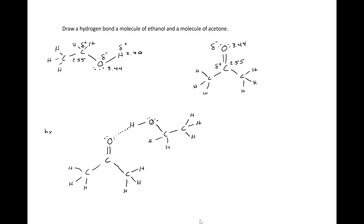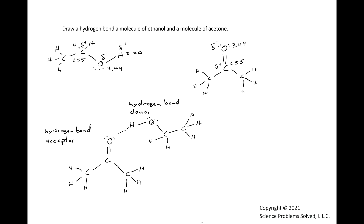In this hydrogen bond, acetone is not providing the hydrogen — it is accepting the hydrogen. Therefore, acetone in this bond is called the hydrogen bond acceptor. In this bond, ethanol is providing the hydrogen for the hydrogen bond, and it is called the hydrogen bond donor.